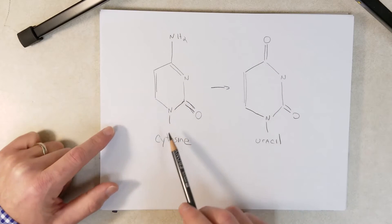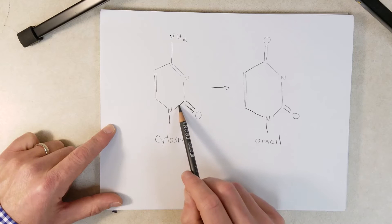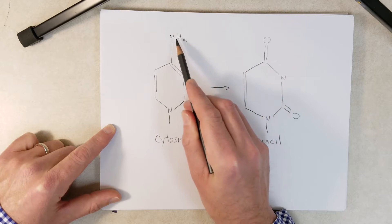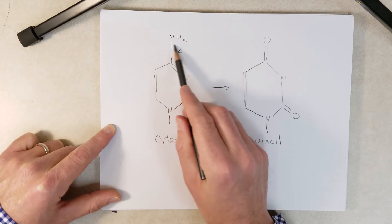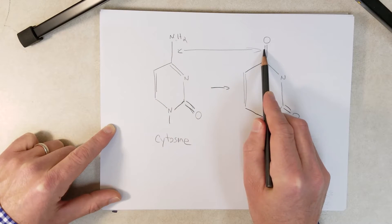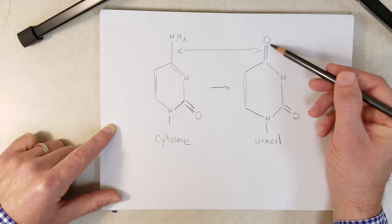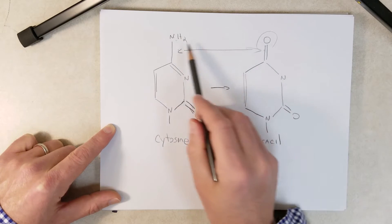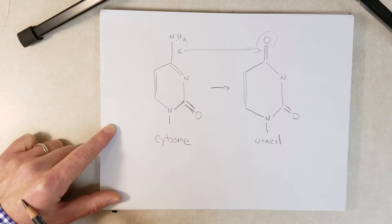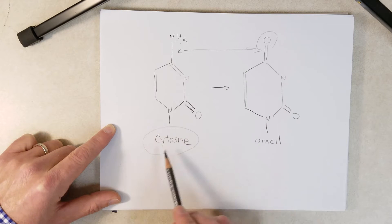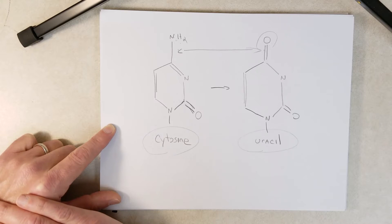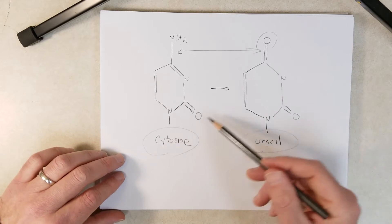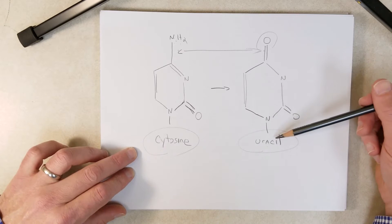On the left I've diagrammed the cytosine nitrogenous base. Something that can happen quite commonly in cells is that the amino group on cytosine can be changed to an oxygen group — an aldehyde or ketone. When that happens, it changes cytosine to uracil. That creates a mismatch, and it's an example of how we can get uracil in DNA.